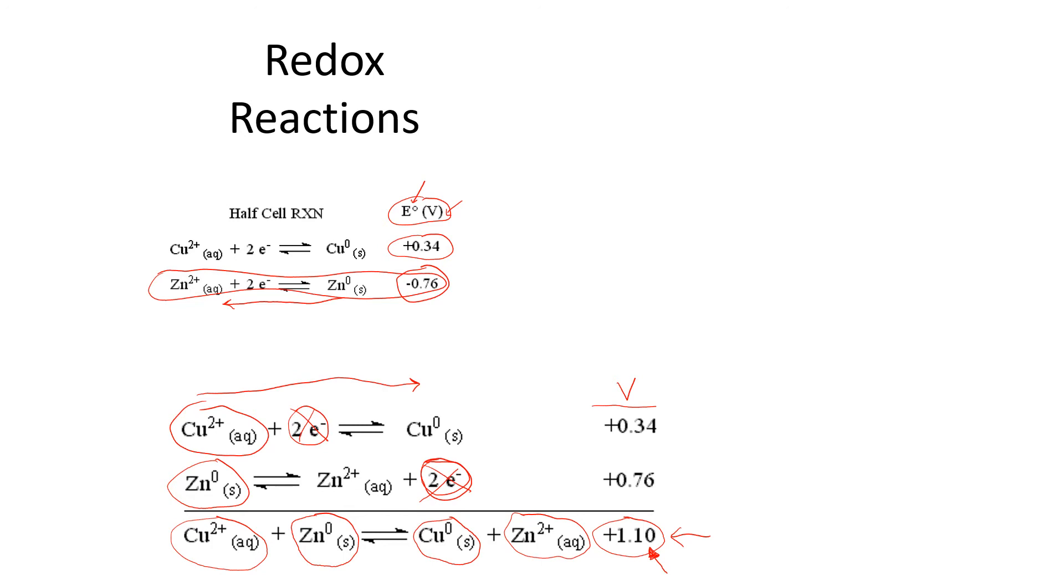You can sum the two reactions to get the reduction potential of the overall reaction. It's positive. Now, we've written the zinc reaction in the opposite direction, so it has a positive reduction potential. There's a positive potential to go from left to right in the zinc reaction. There's a positive potential to go from left to right in the copper reaction, too. But that was the way it was at the beginning, up here at the top. Zinc, we had to write in the opposite direction. We can do that. We sum them, these reactions.